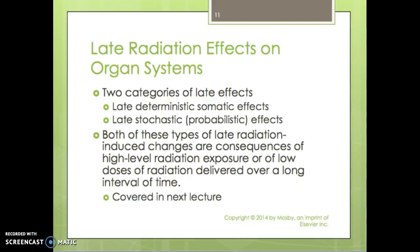Late effects on organ systems will be covered in more depth next week. There are two categories of late effects: late deterministic somatic effects and late stochastic probabilistic effects. Both types of late radiation-induced changes are consequences of high-level radiation exposure or of low-dose radiation delivered over a long interval of time, such as occurs in radiation therapy.